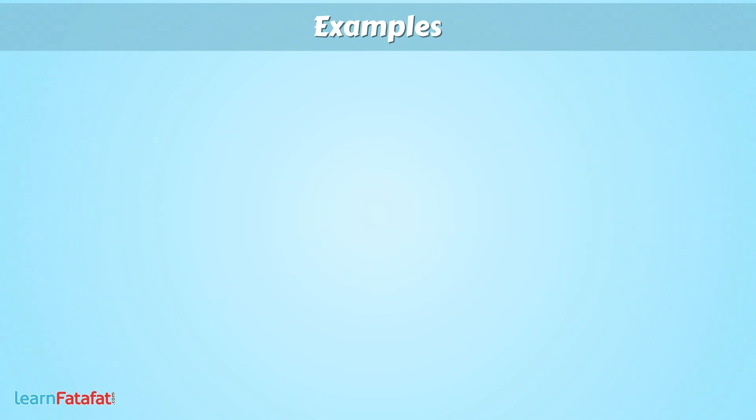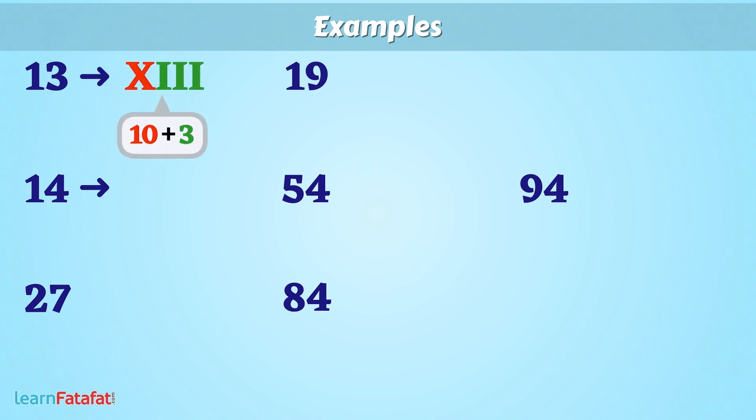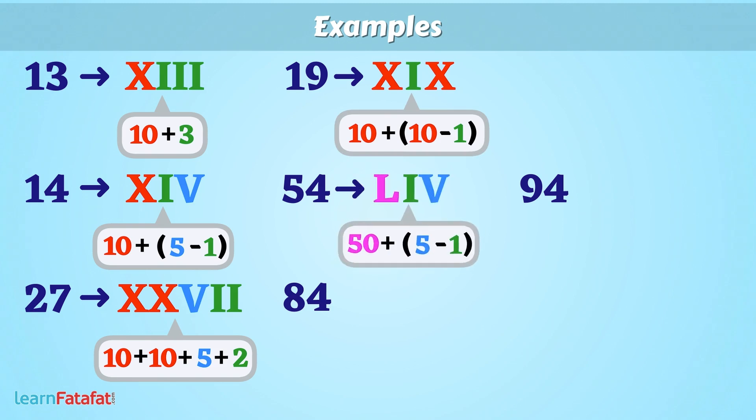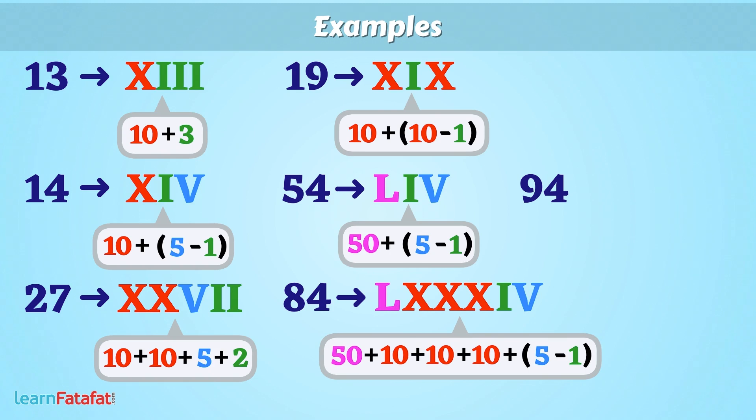So, write given numbers in Roman numerals. 13 can be written as XIII. 14 can be written as XIV. 27 can be written as XXVII. 19 can be written as XIX. 54 can be written as LIV. 84 can be written as LXXXIV. And 94 can be written as XCIV.